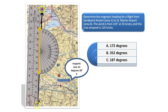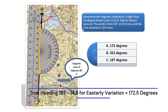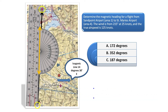We need to subtract 14.5 degrees from the true heading of 187 degrees to get the correct magnetic heading. In this case, the magnetic heading would be 172.5 degrees. The correct answer is A. We can round to the closest whole heading value.